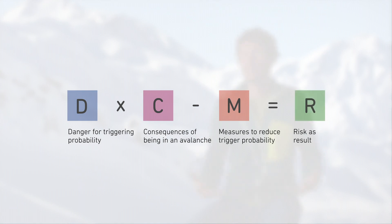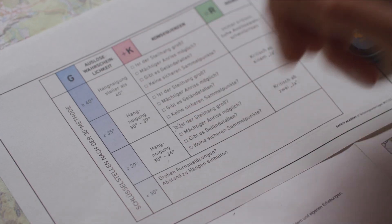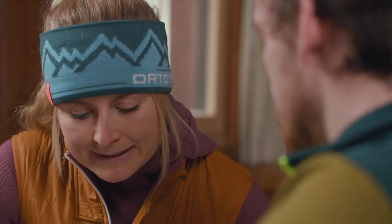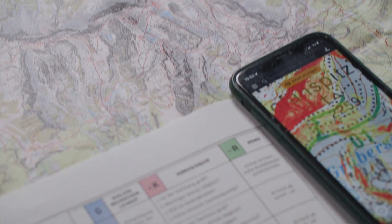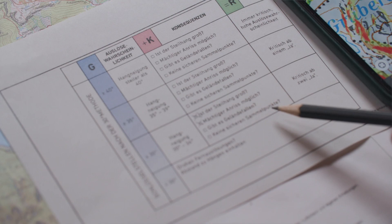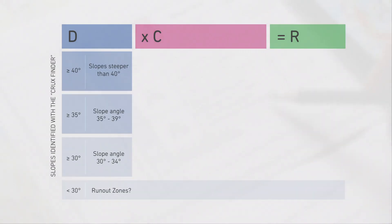Risk is hazard times consequences — that is our risk management system, and this is always the path we follow out on the mountain and in planning. The only difference is that when planning, we have the avalanche bulletin to help us. This gives us a regional evaluation, but not yet a local evaluation, which we will conduct out in the mountains. When it comes to danger, we use the danger level or slope angle to help us gauge whether the danger level will be high or low the next day when we set out on our tour.